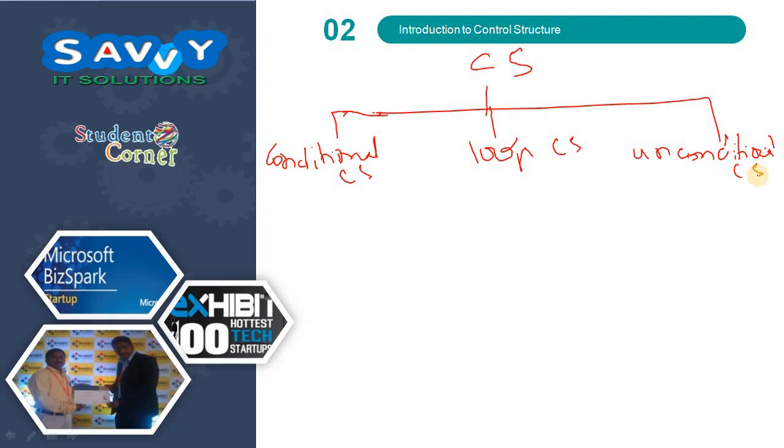Conditional control structures means you check the condition. If the condition is true, we process next. Otherwise it goes to the else part or takes another decision. Loop control structures are a group of statements running repeatedly.